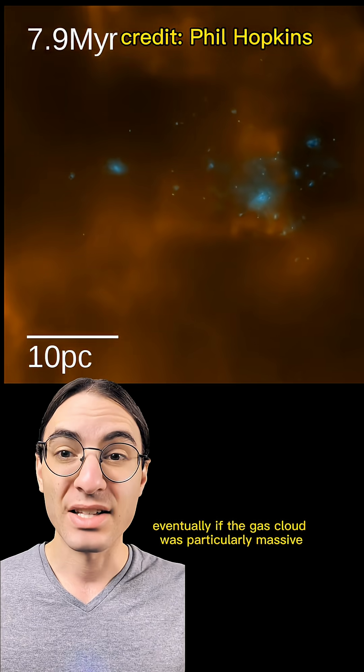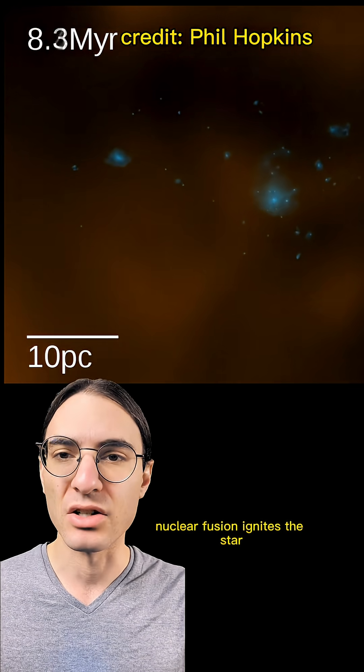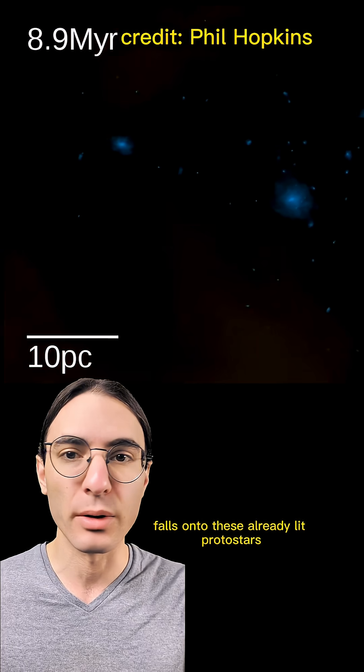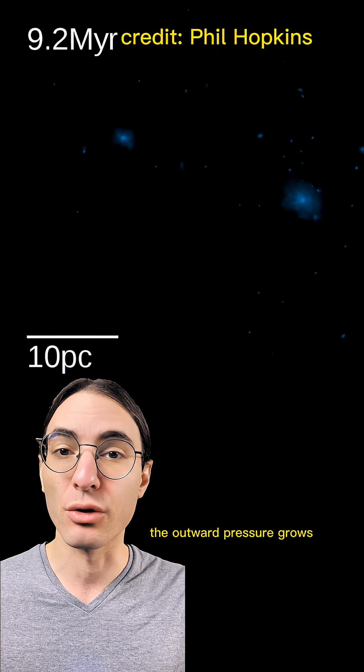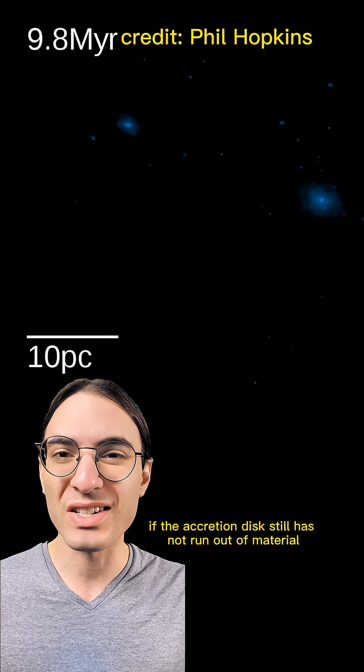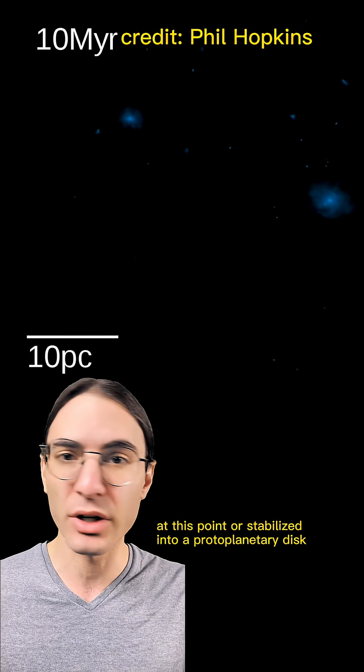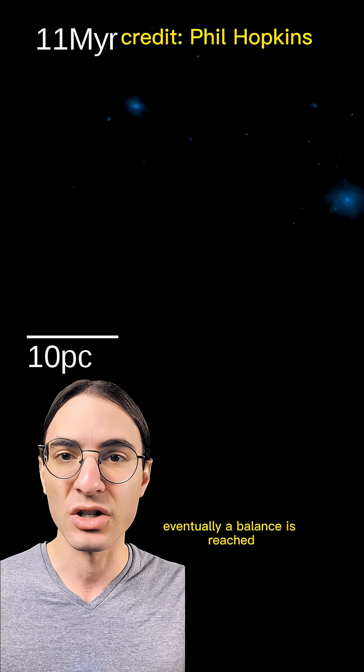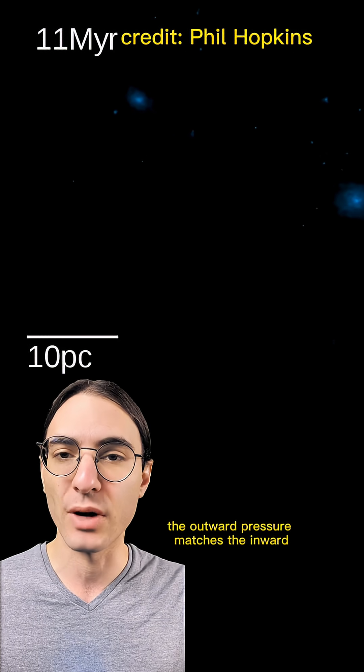Eventually, if the gas cloud was particularly massive, nuclear fusion ignites the star before accretion is completed. As more and more gas falls onto these already-lit protostars, the outward pressure grows because the stars get brighter and brighter and hotter and hotter. If the accretion disk still has not run out of material at this point, or stabilized into a protoplanetary disk, eventually a balance is reached. The outward pressure matches the inward gravitational pull.